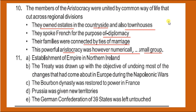Under the treaty, Prussia was given new territories and annexed kingdoms were also given to Prussia. The German confederation of 39 states was left untouched. If you remember the Zollverein — the customs union across the provinces once ruled by Napoleon Bonaparte — after the Battle of Waterloo, the German confederation of 39 states was not significantly changed; it was left untouched.